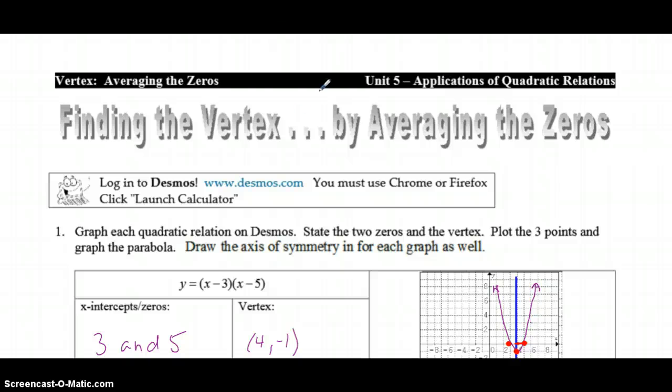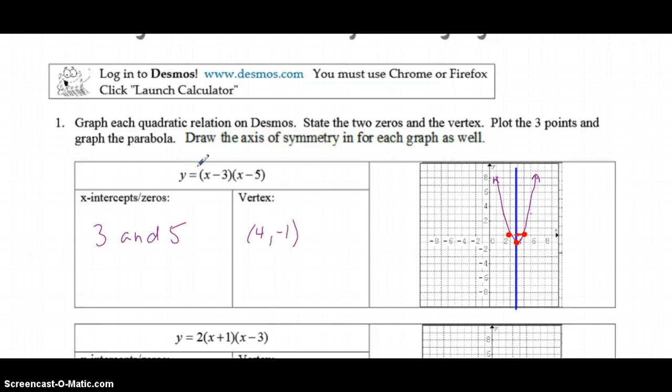For that first activity, you should have gone to desmos.com and plotted all these equations. If you haven't done that yet, please go do that—it's a good exercise. If you have, continue with this video. Punch the equation in, identify the x-intercepts and vertex via Desmos, plot those three coordinates and sketch your parabola. I've also drawn in the axis of symmetry for each one, which is the vertical line that goes through the vertex.